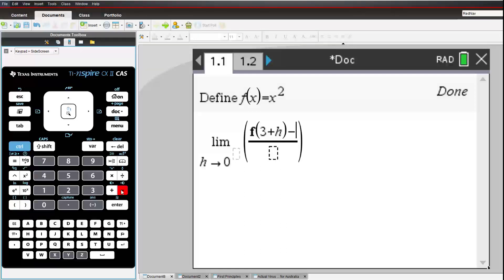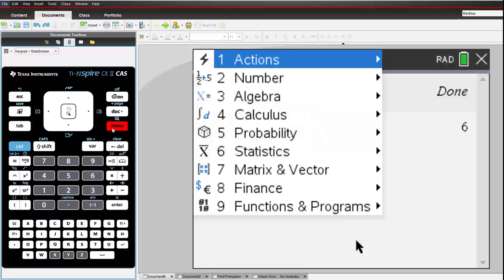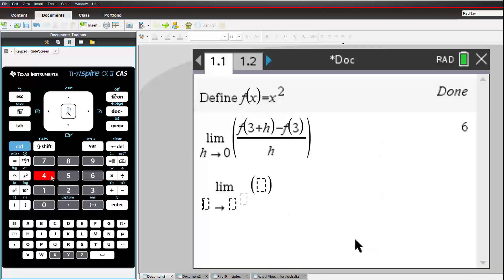So, we have generalized the approach to the gradient at a specific point. If we are interested in the relationship between the x-coordinate and the gradient, then we are talking about a gradient function. So, we replace the 3 with the general point x, and go again.